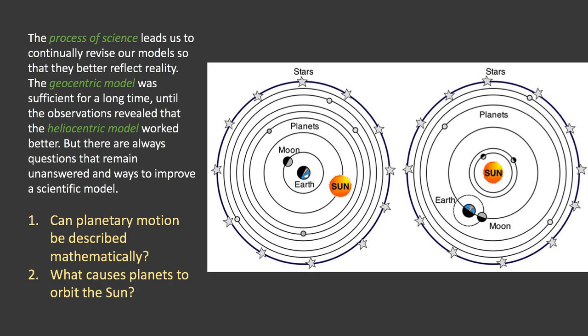And I want to look at two questions specifically. Can planetary motion be described mathematically? Can you put an equation that tells you exactly how the planets are moving around the sun? And then the second one, which is maybe more interesting, at least to a lot of you, what causes the planets to orbit the sun? What's making them move?